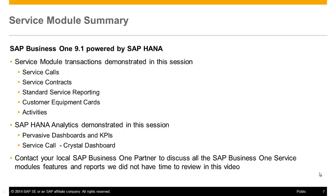During the previous two demonstration scenarios, we saw how SAP Business One 9.1 powered by SAP HANA delivered powerful analytic tools and transactions to facilitate two key service department users in the efficient and integrated support of their customers' questions and issues. We watched as Sophie and Caroline of the OEC Service Department used SAP Business One to address service calls, service contracts, standard service module reports, customer equipment cards, activities, and custom and delivered service management analytics. We saw how the power of SAP HANA analytics can be tailored and put to use by end users, who built their own custom dashboards and KPIs, and leveraged the delivered SAP Crystal dashboard service call to manage their daily workloads. Contact your local SAP Business One partner to discuss all the service module features and reports. Thank you for listening!